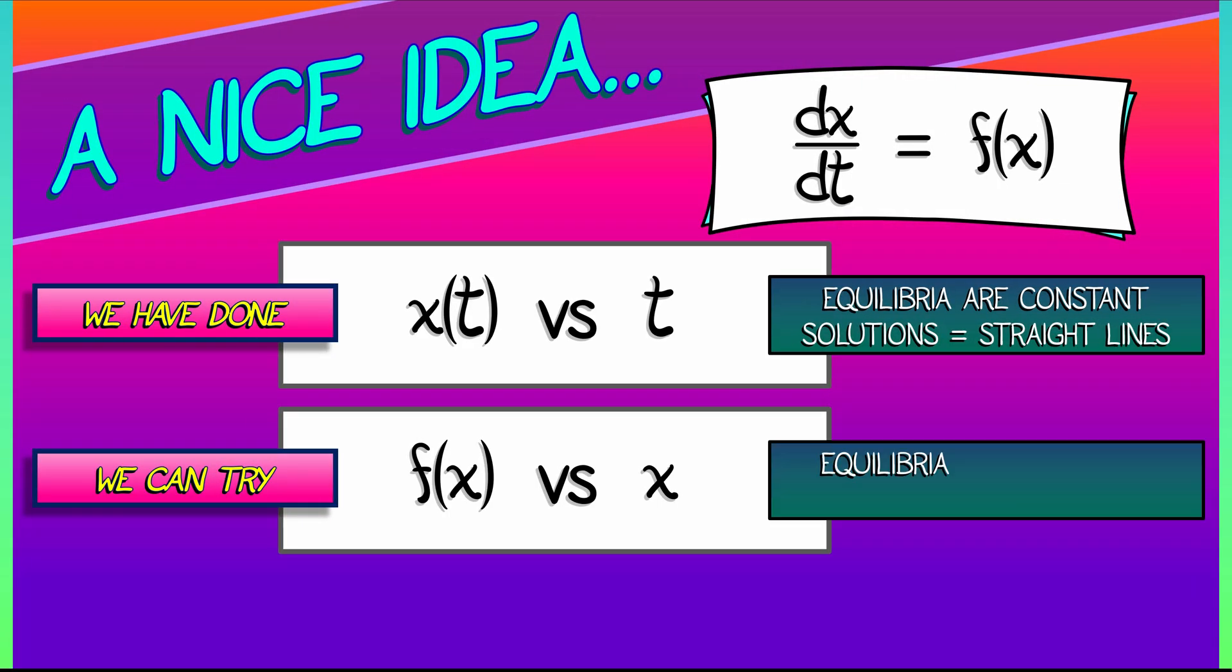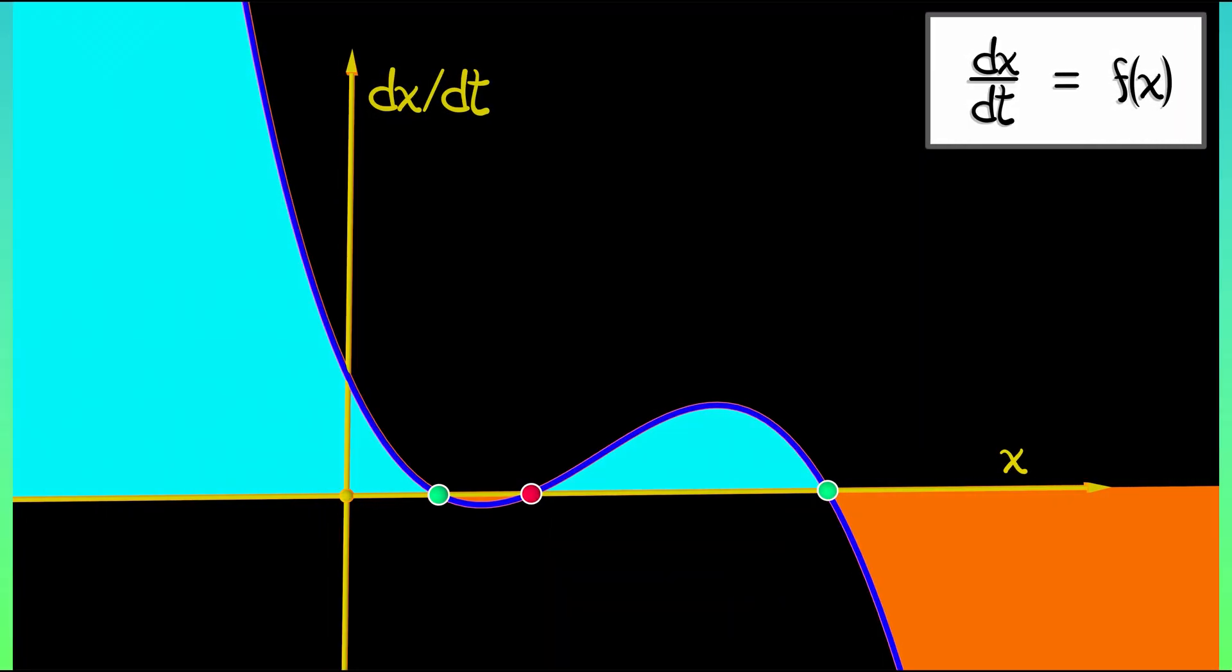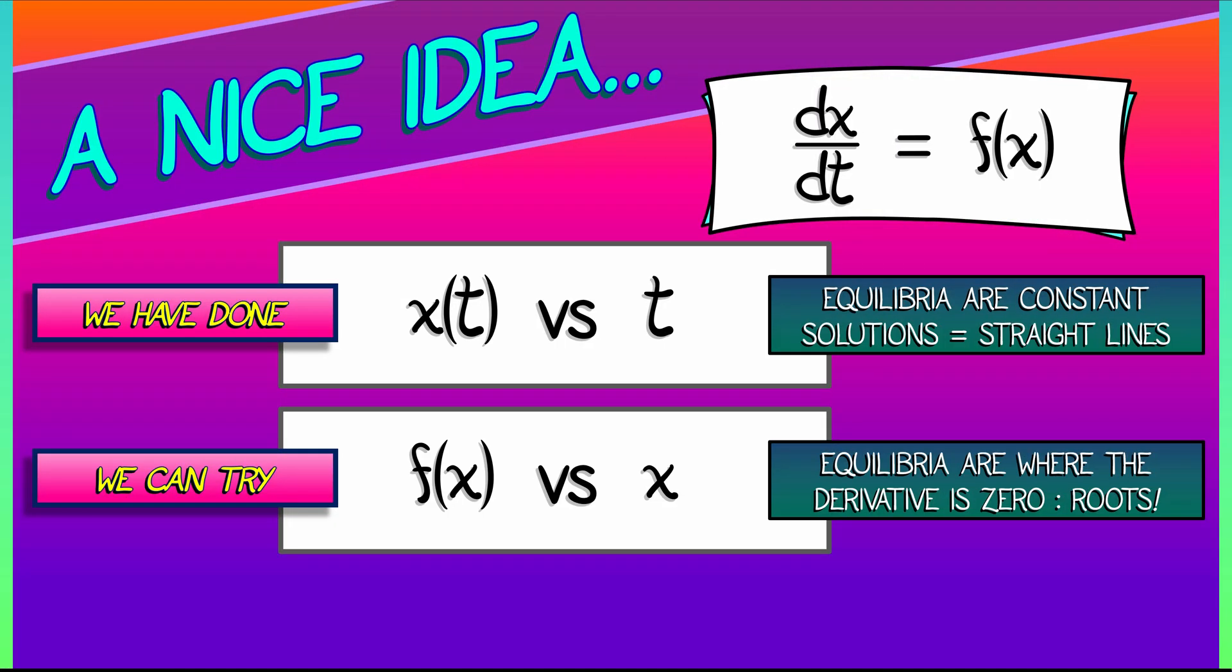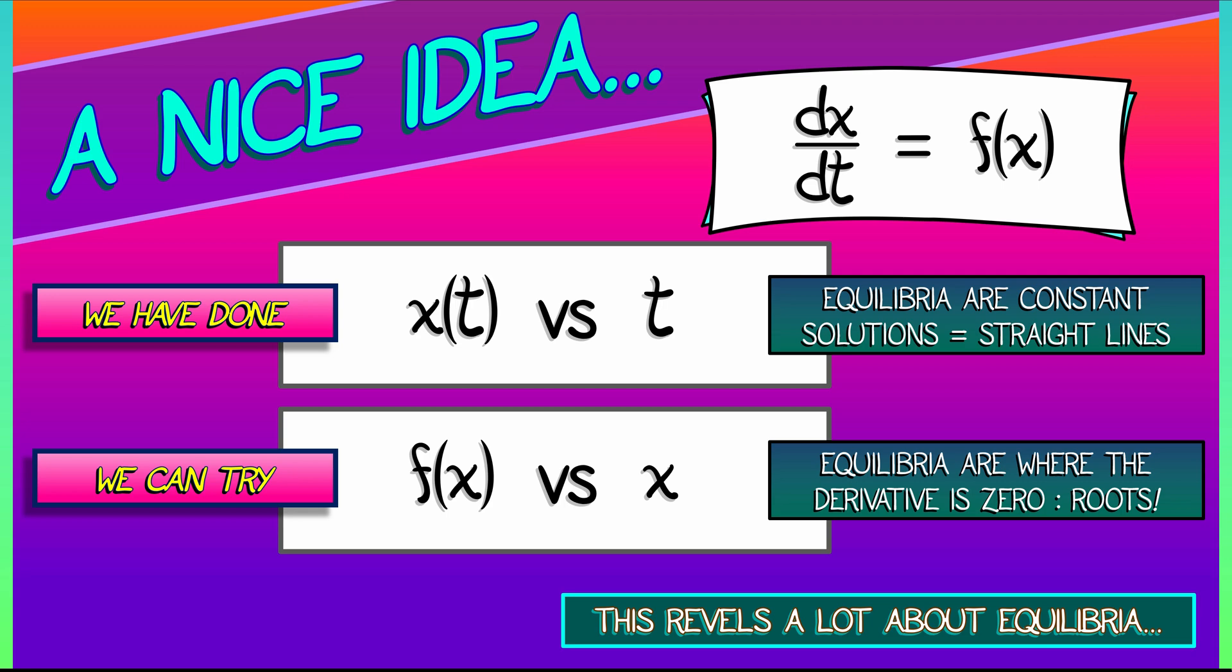The equilibria constant solutions are where dx dt is zero. That corresponds to the roots of f. So if we plot f versus x, we can see exactly where the equilibria are. And that's not all, as we'll see next time. But for now, it's bonus time.